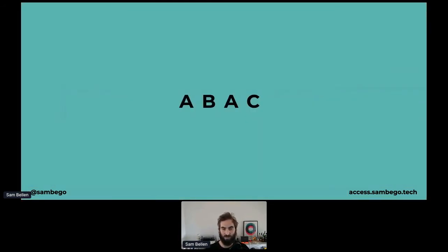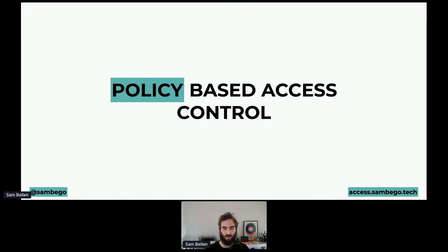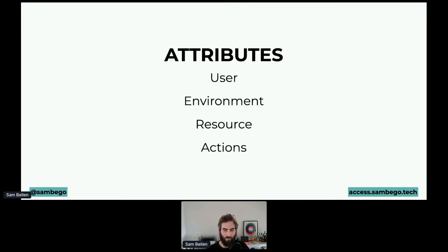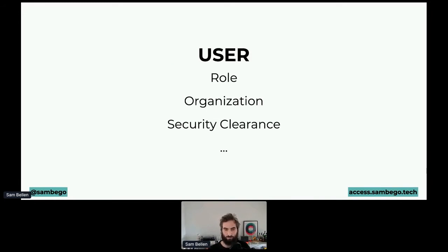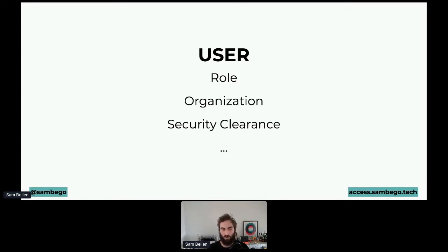The first type is attribute-based access control, also sometimes known as policy-based access control. It relies on a bunch of attributes to define who can access what. This can be user-based attributes, environmental-based attributes, some attributes of the resource, and maybe some actions. Different types of actions might give you different outcomes. User-based attributes include something like the role of the user — I'm a developer advocate, an engineer might have different roles or permissions, and a CTO or CEO might have different ones as well. Other user attributes include the organization you're part of, and security clearance.